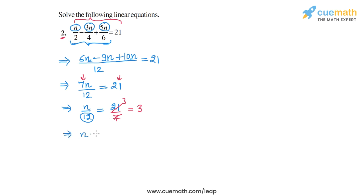So we will get n is equal to 3 times this 12 from the denominator on the left hand side. So basically, what we obtain is n is equal to 36 as the solution of this equation.